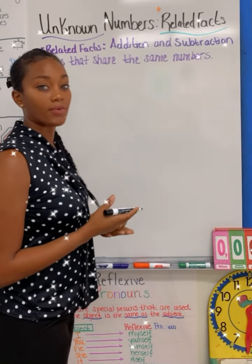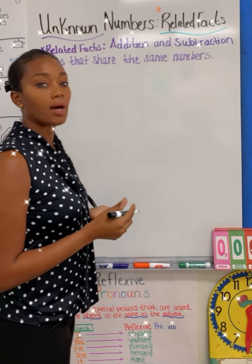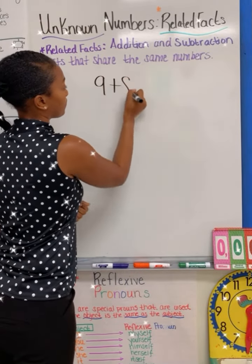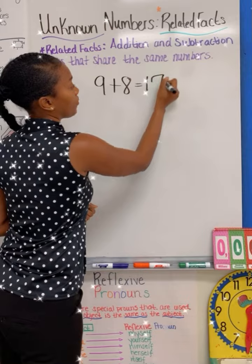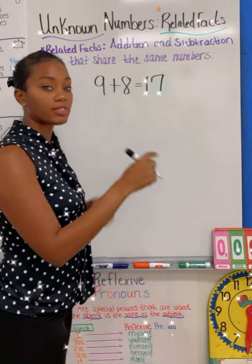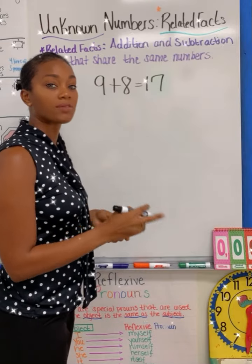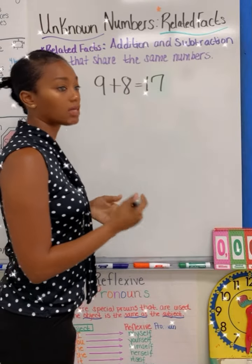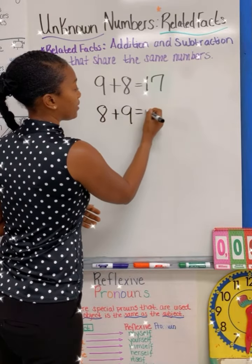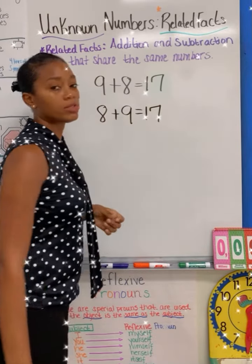Let's try another example. Say I have the numbers nine plus eight, which is equal to the sum of 17. If I reverse these set of numbers, I'm going to find my related fact, which would be eight plus nine is equal to 17.